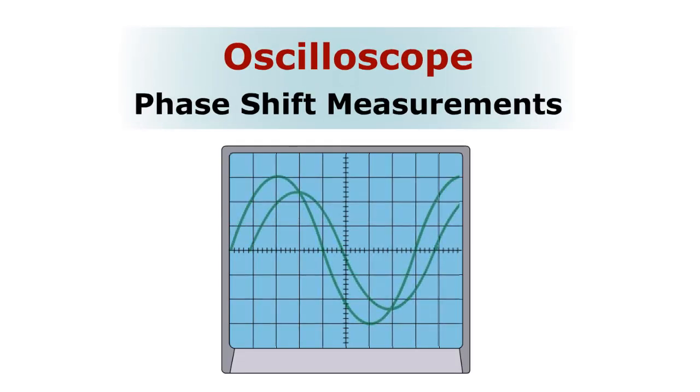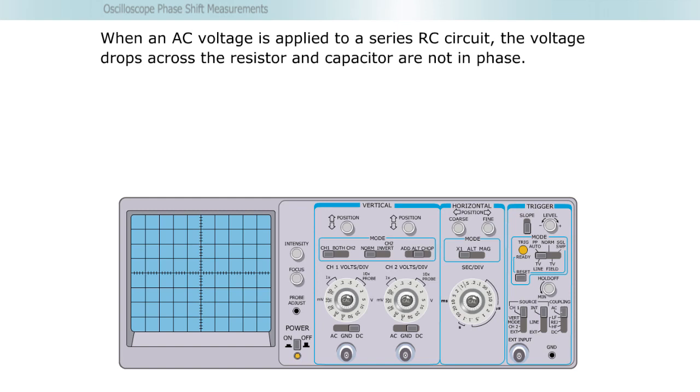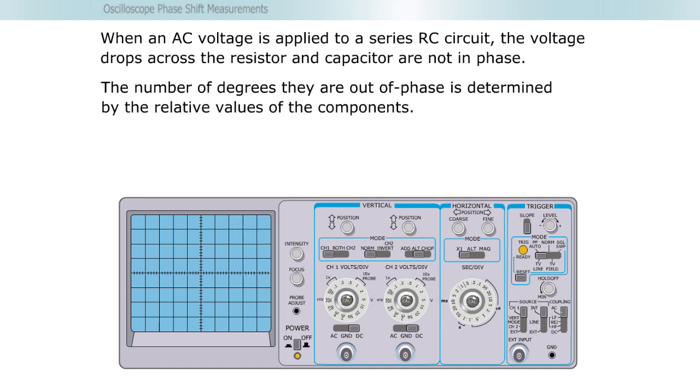Oscilloscope phase shift measurements. When an AC voltage is applied to a series RC circuit, the voltage drops across the resistor and capacitor are not in phase. The number of degrees they are out of phase is determined by the relative values of the components.